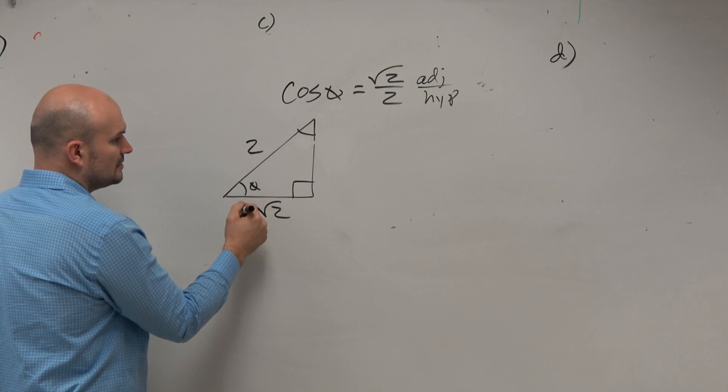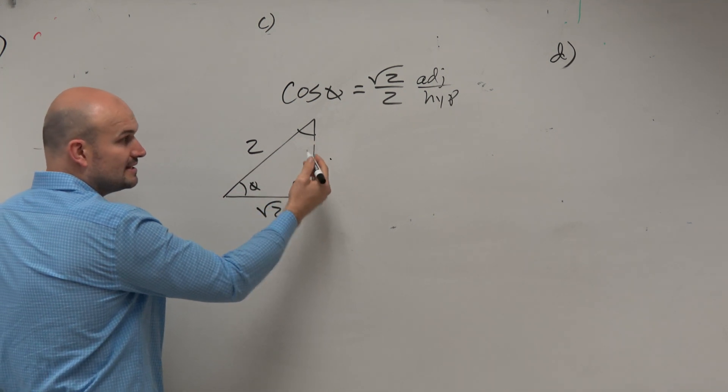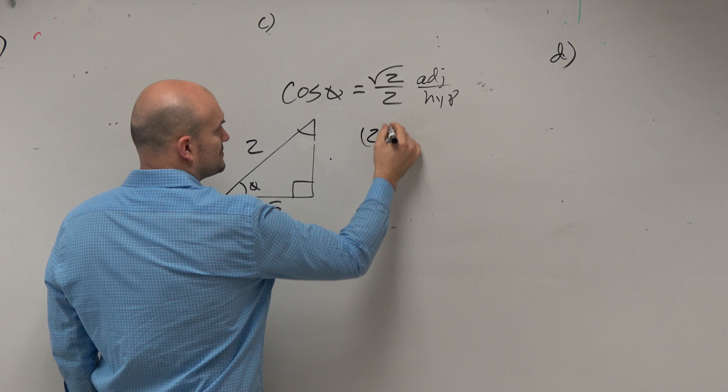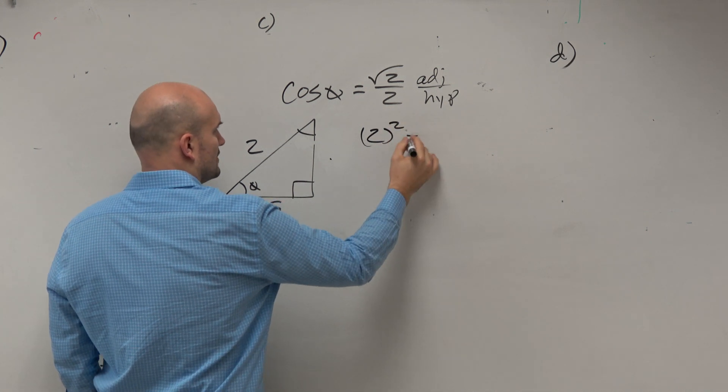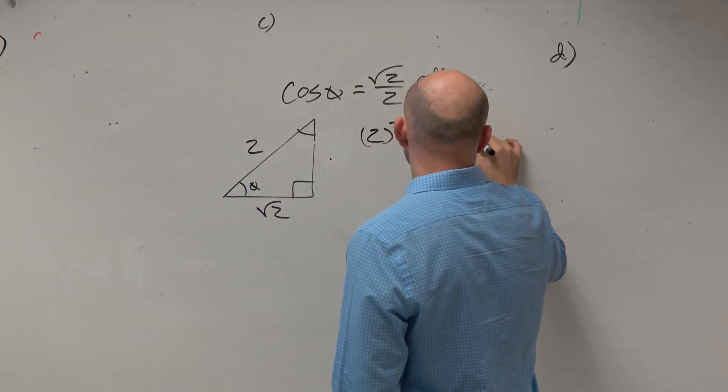So now, let's go ahead and figure out this side, which would be our opposite. I'll just set this up. 2 squared is equal to b squared plus the square root of 2 squared.